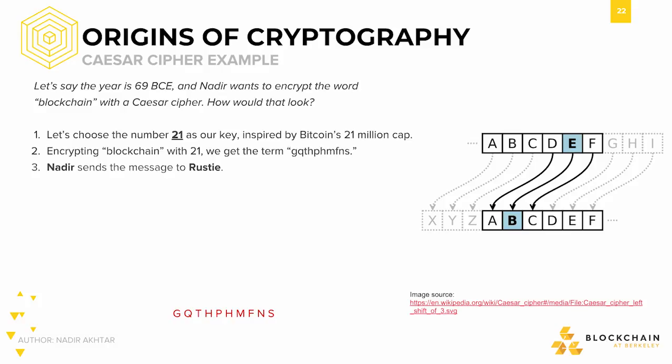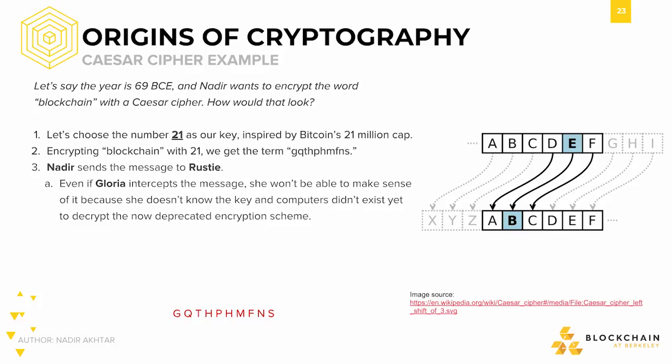Nadir can now send this message to me without fear of anyone else reading it. Let's say Gloria, a traitor general giving secrets to the enemy, happens to intercept this message. What can she do with it? She can burn it or corrupt it, but she can't read it. Perhaps she doesn't want to mess with the message, since that could inform Nadir or myself of the traitor. So she decides not to do anything. By using the Caesar cipher, we foiled her attempts at betraying the Roman Empire.